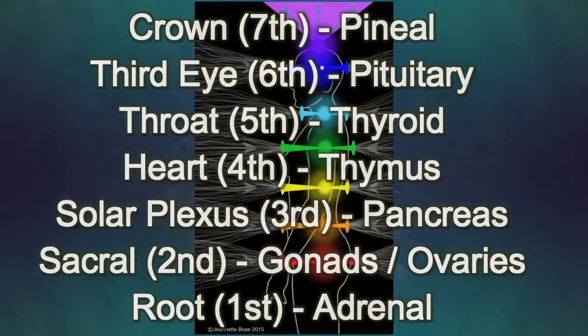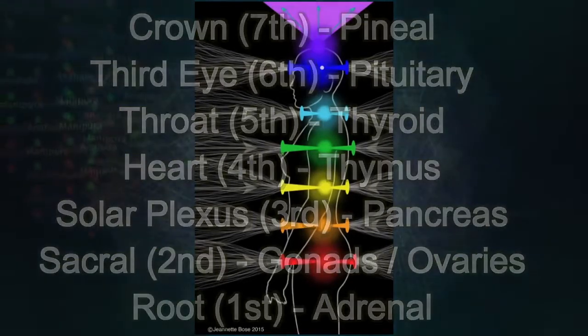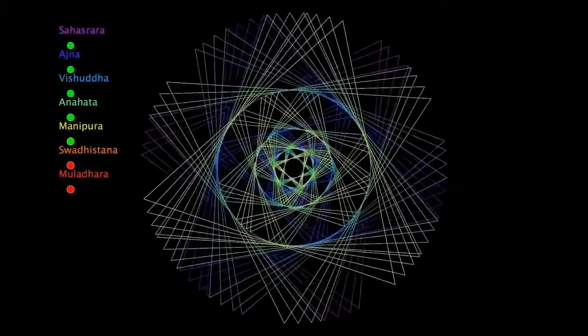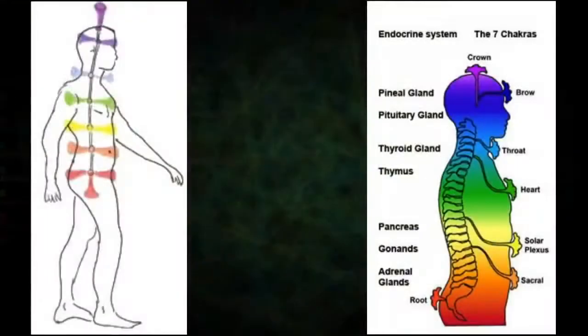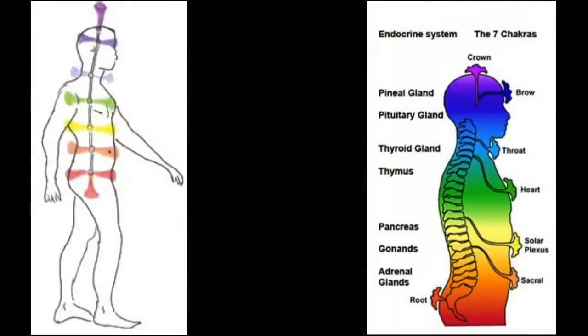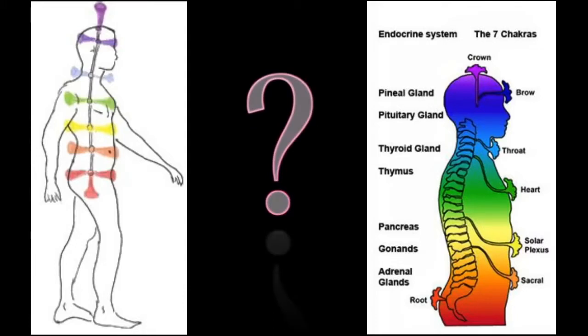But chakras aren't physical in nature. They are energy centers that influence our being at every level, including physiologically. But what would create disturbances in our energy and thus chakras? And why would we even have these seven energy containers?